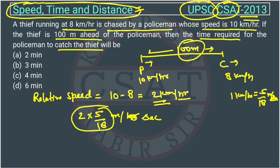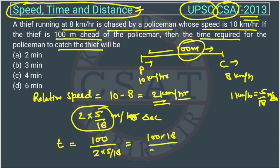The time taken equals distance divided by speed. Distance is 100 meters and speed is 2 into 5/18. So time equals 100 into 18 divided by 2 into 5, which gives us 180 seconds.